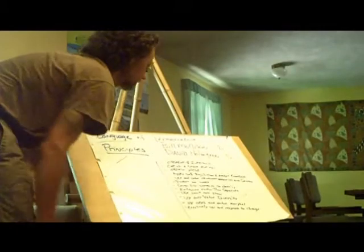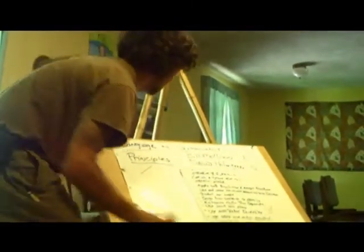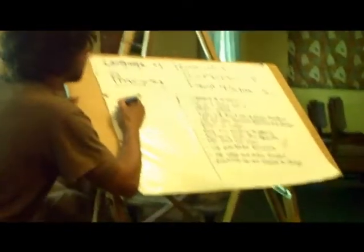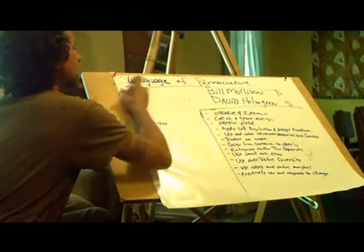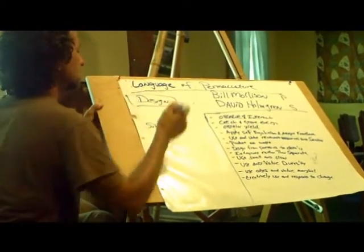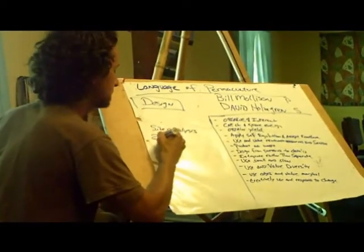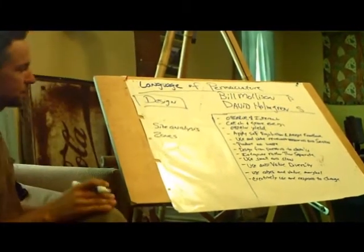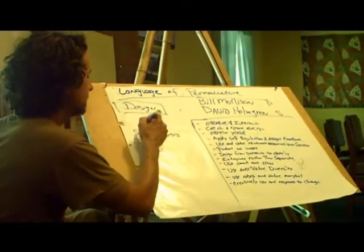Let's step back a little bit. So those are the ethics. Now, there's a certain format to design science. There's site analysis. Now we're looking at it in a design framework. There's zoning — let's talk about zones. And there's sectors, and other things too, but I'll go over these real quick.